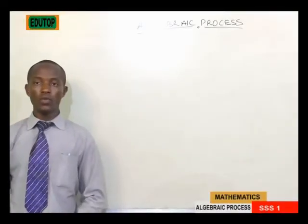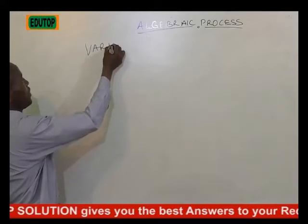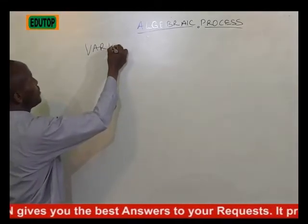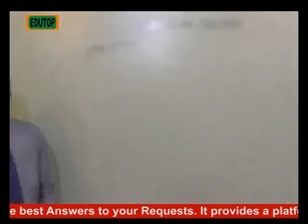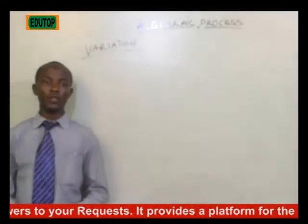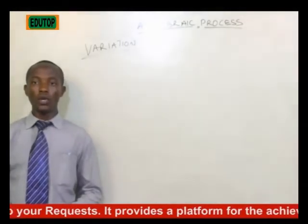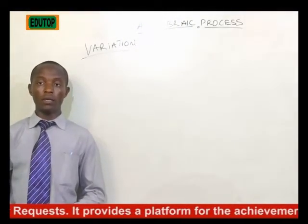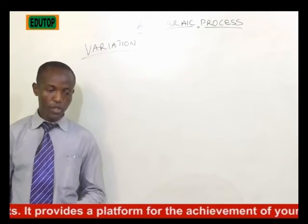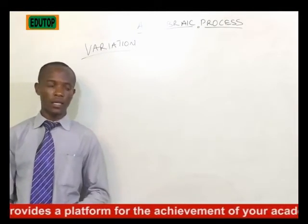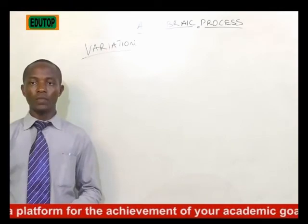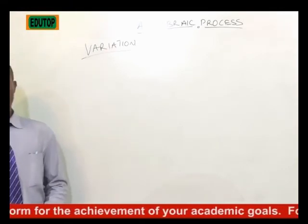We are going to go to our next topic, which is variation, under algebraic process. Under variation, we have different types: we have direct variation, inverse variation, partial variation, and joint variation — the one that combines direct and inverse variation. We will be starting with direct variation.